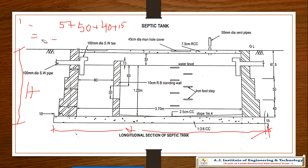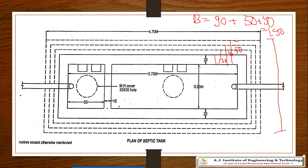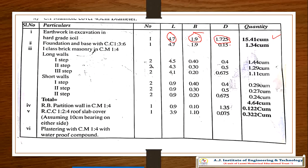Now we go to CC floor bed. After excavation, the first step is to put the CC floor bed for the foundation to withstand the structure. The length is same as 4.70 m, the height is 15 cm = 0.15 m, and the breadth is same as 1.90 m. Only the height changes from the excavation — the same length and breadth are used.